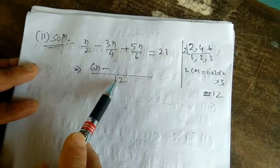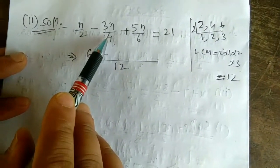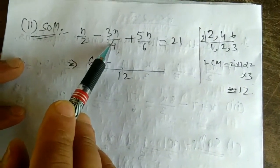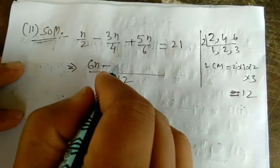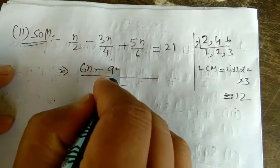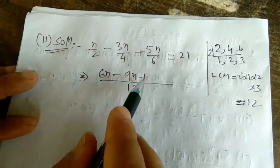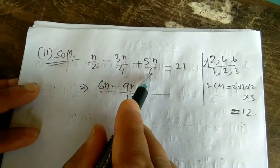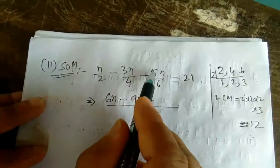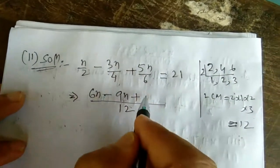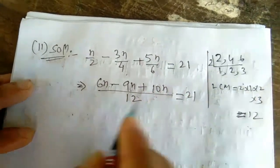Dividing LCM 12 by denominator 4 gives 3, so 3 times 3n = 9n. Plus, dividing 12 by 6 gives 2, so 2 times 5n = 10n. So the equation becomes: 6n - 9n + 10n = 21 into 12.